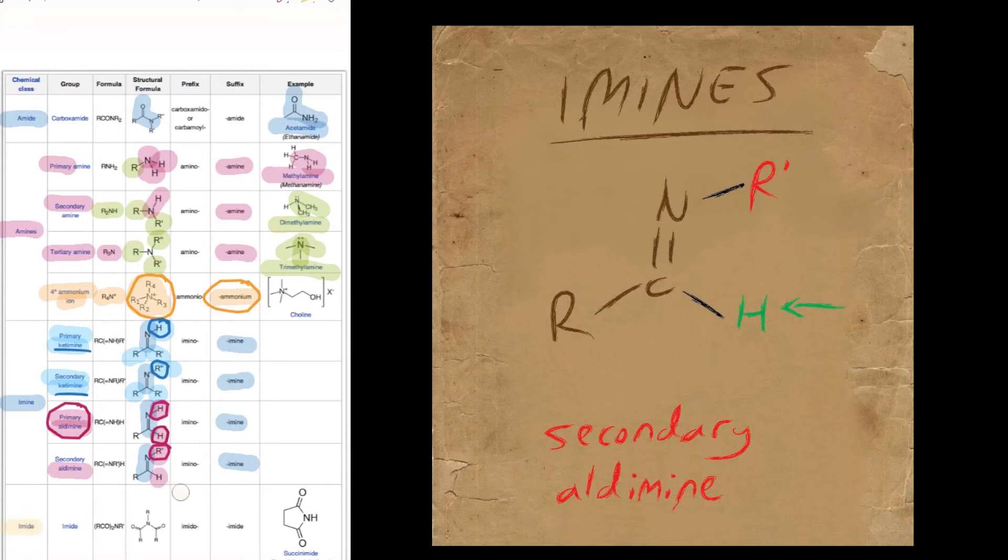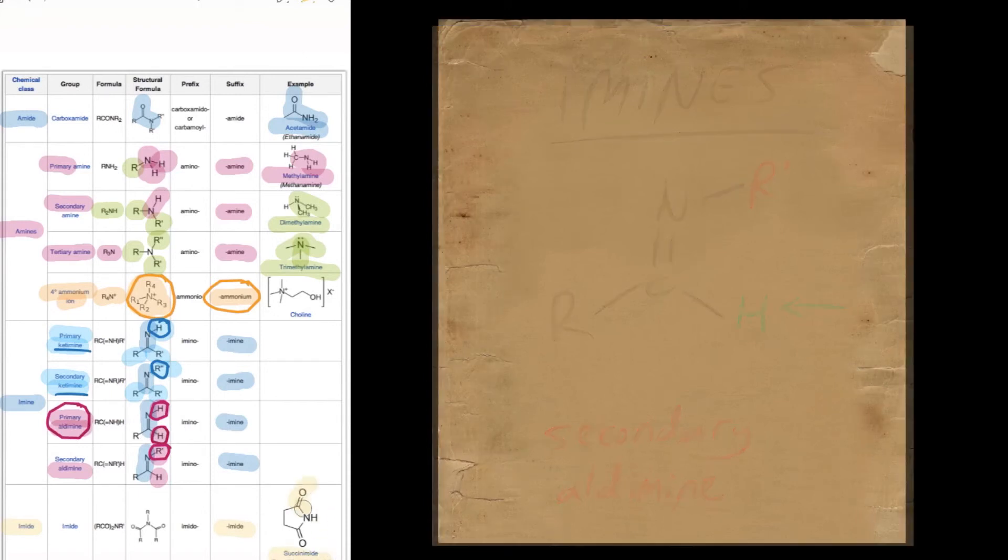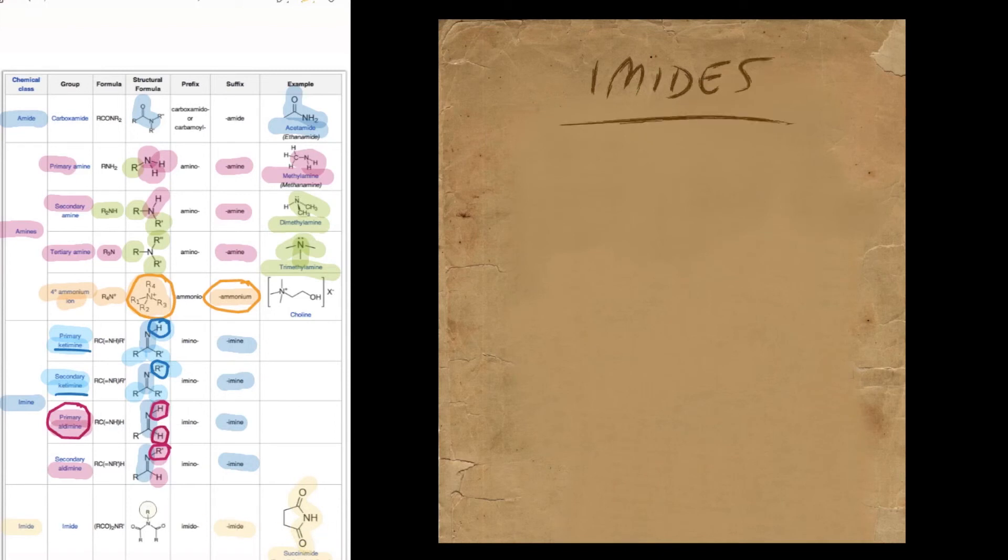That brings us to the last one in the series, the imides. They're spelled I-M-I-D-E-S, but you actually pronounce the compounds imide. In this particular example, we've got succinimide, and these imides are quite straightforward and easy to pick up as they've got a carbonyl group connected to a nitrogen which is connected to another carbonyl group, very similar to the carboxylates we saw in the oxygen functional groups.